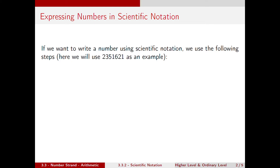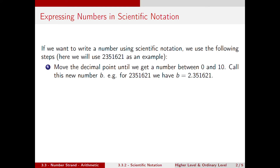We will look at an example of how to write a number using scientific notation. In our example we will use 2,351,621. Our first step is to move the decimal point until we get a number between 0 and 10. For our number we can imagine that the decimal point is at the very right hand side, just after the last 1, and the following numbers after the decimal point are all zeros. So what we do is move our decimal point from there to the left until we get 2.351621.